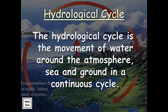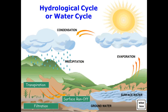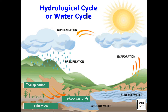The Hydrological Cycle is the movement of water around the atmosphere, sea, and ground in a continuous cycle. The process involves water going from the clouds to vegetation, ground, soil, rock, sea, lakes and rivers, and back to the clouds. Here is an illustration of the hydrological cycle or the water cycle. It involves processes such as evaporation, condensation, precipitation, surface runoff, subsurface runoff, and transpiration.